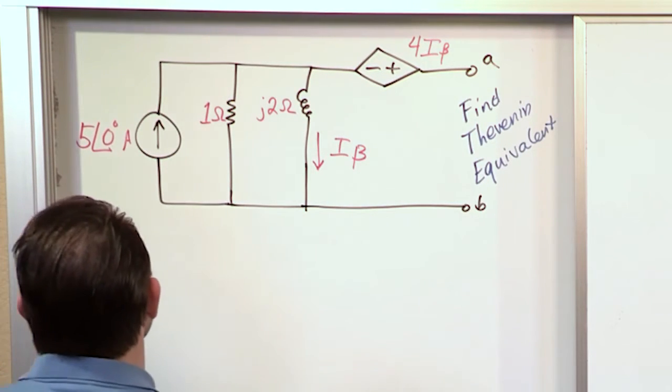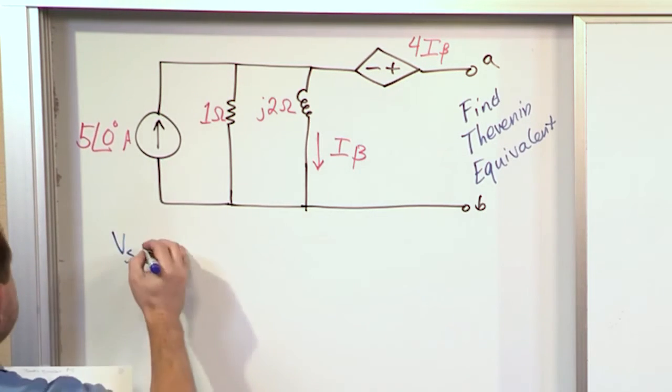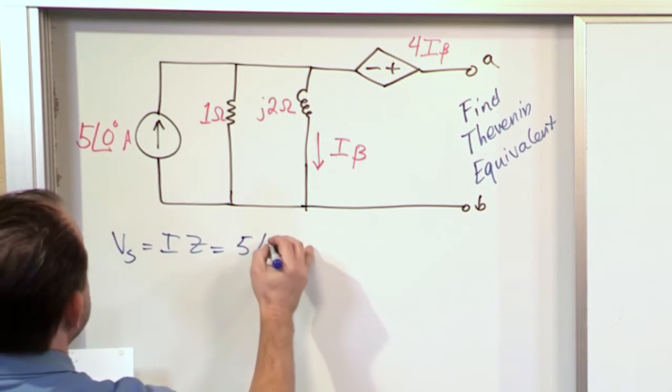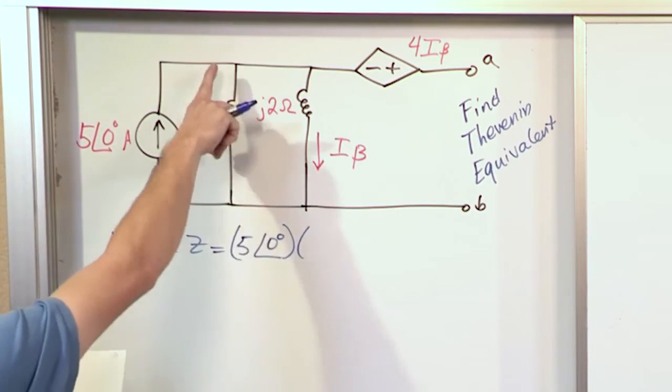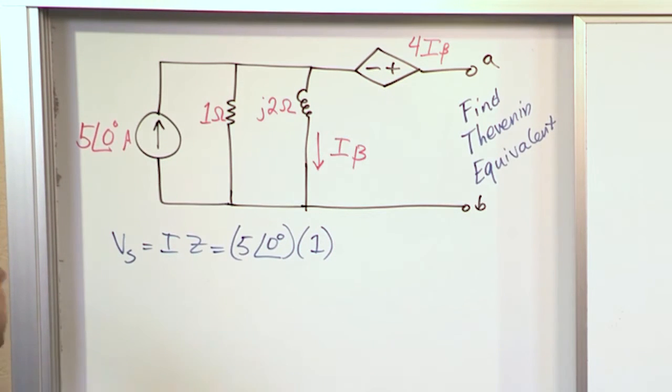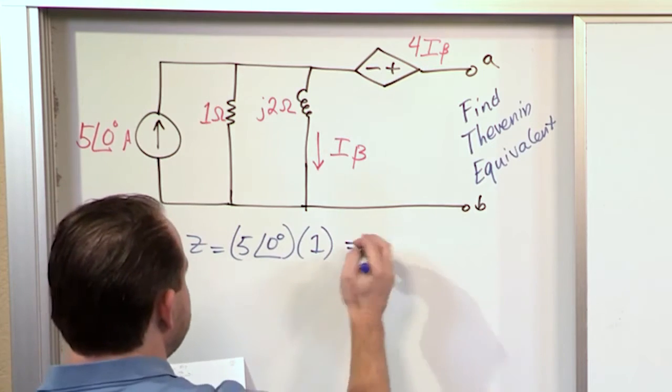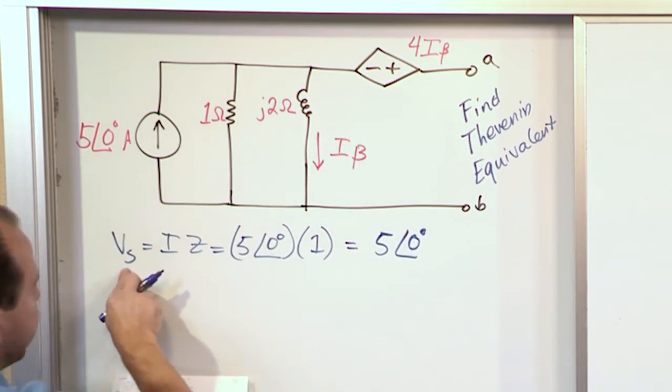Now, to find this source transformation voltage, voltage of the source is going to be equal to i times z. And this current source is 5 amps at an angle of 0 degrees. That's the current. And the impedance here that's in parallel with it is just simply 1. It's not even imaginary. It's literally just 1. So basically what you have for this source transformed voltage is the same thing multiplied by 1, it's 5 at an angle of 0 degrees volts.